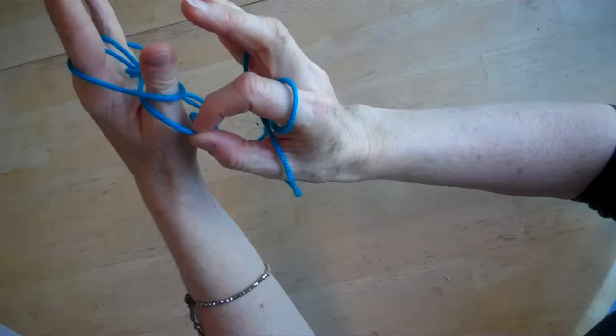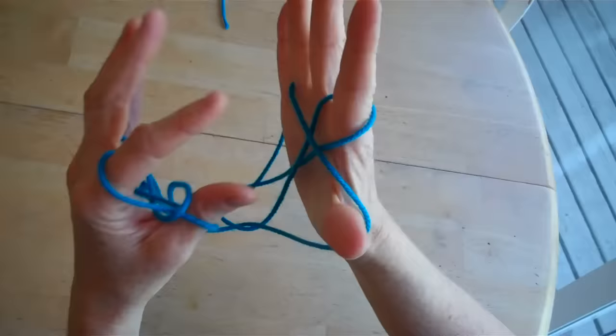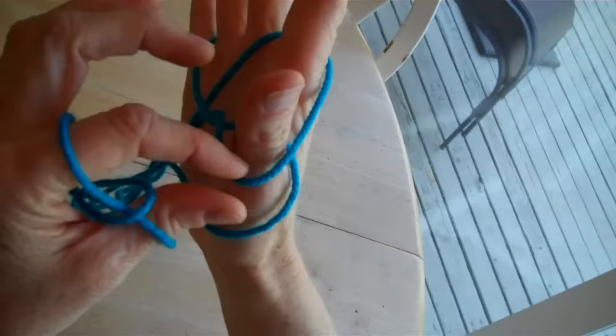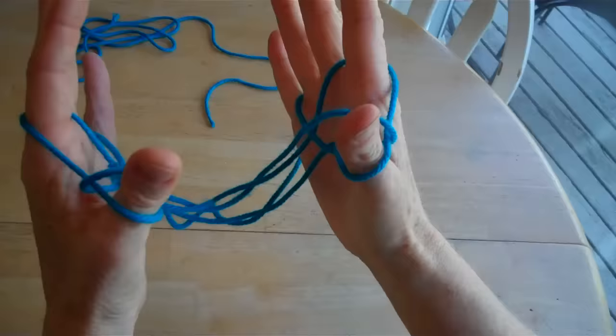Now repeat that on your right hand. Take the string from your forefinger and put it over your thumb, then take the bottom string the other way over the thumb. You should now have one string around your thumb.